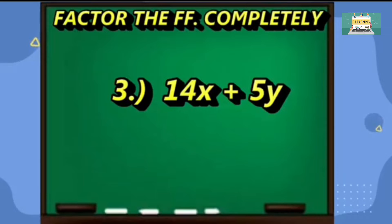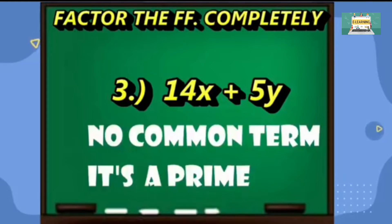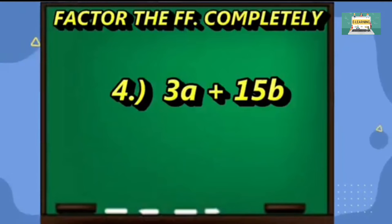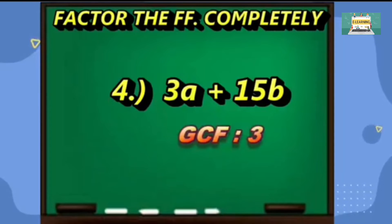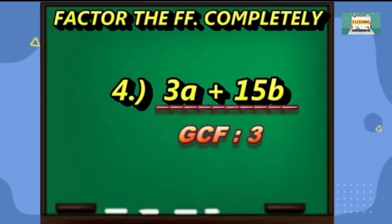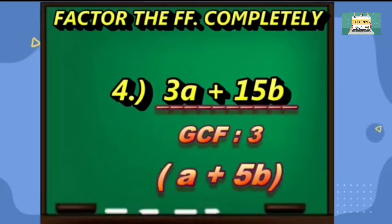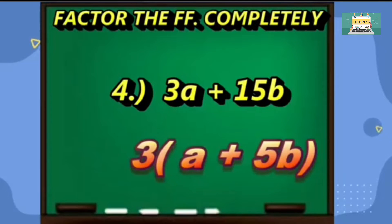Third example: 14x plus 5y. You will notice that there will be no common factor on each term, so therefore the given is a prime. Last example: 3a plus 15b is a binomial. Step one, find the greatest common factor of the two terms, and that will be 3. Step two, divide the given polynomial by common monomial factor and get the quotient. The answer will be a plus 5b. The factored form answer will be 3 times the quantity a plus 5b.